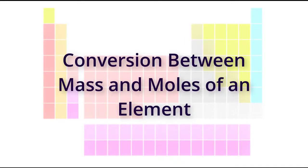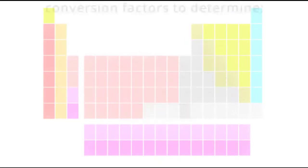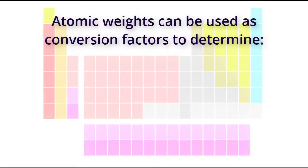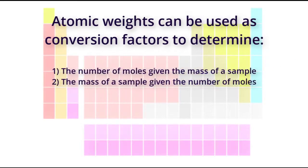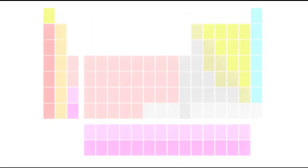Conversion between mass and moles of an element. Atomic weights can be used as conversion factors to determine the number of moles given the mass of a sample, or the mass of a sample given the number of moles.